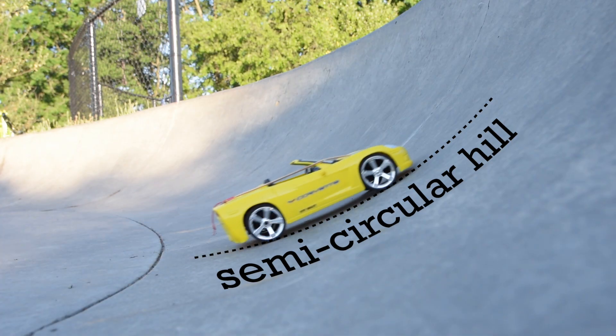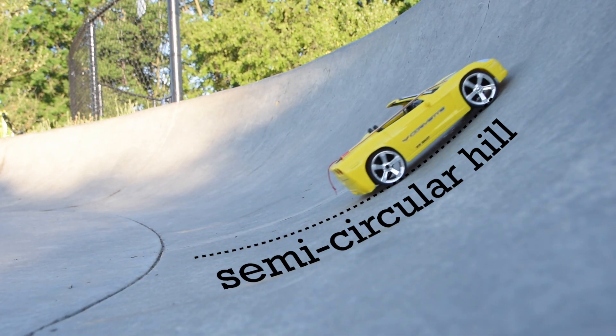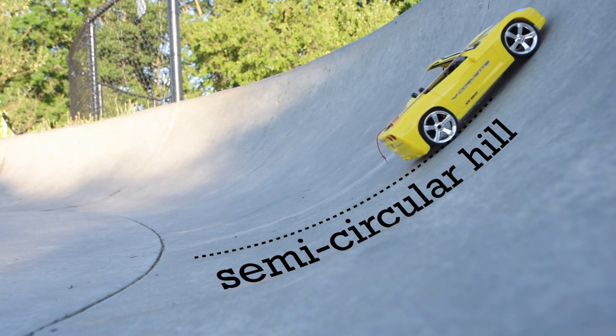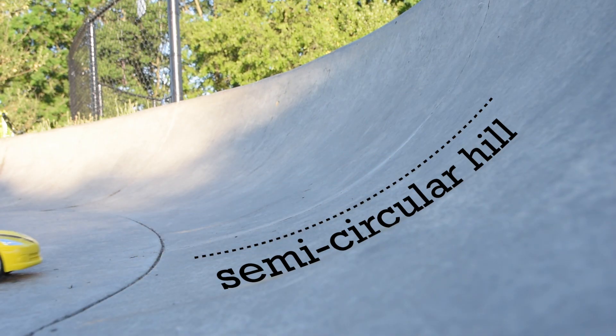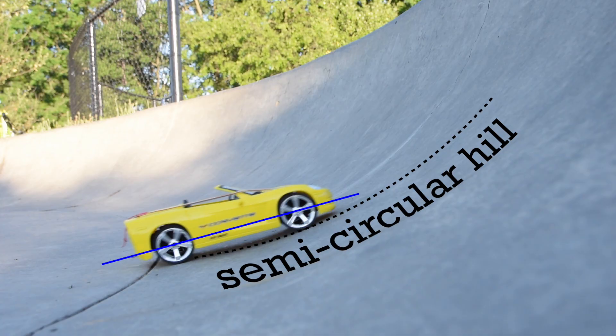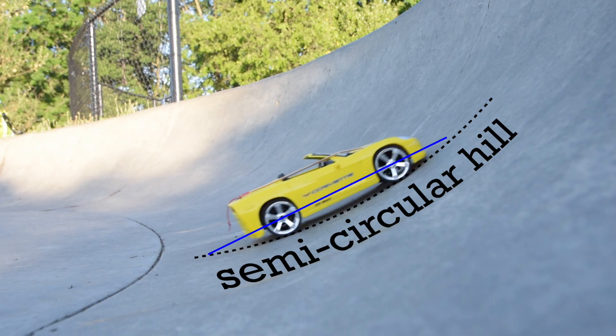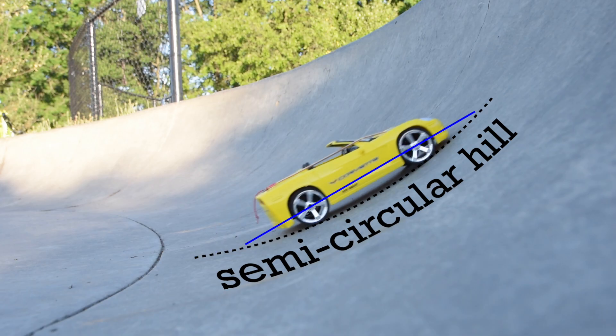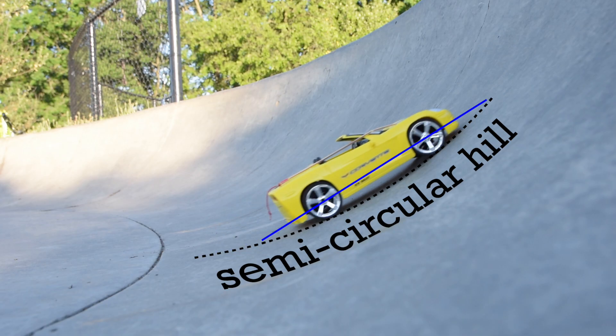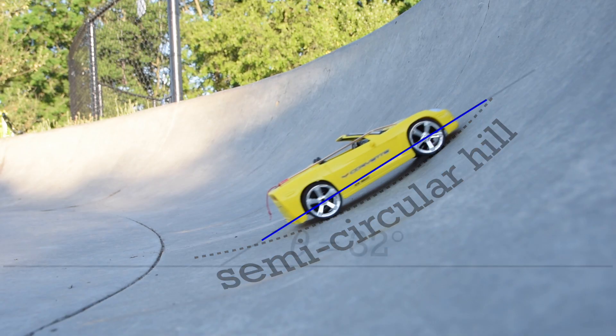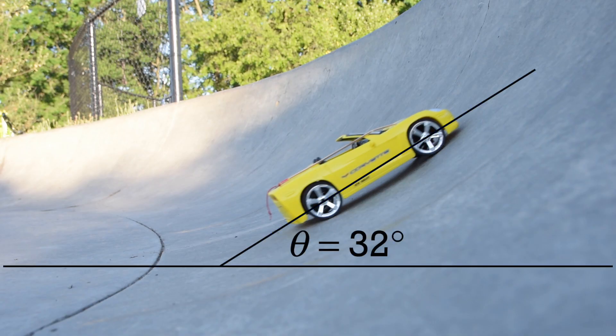Let me clarify that angle. As the car goes up the hill, the angle of the hill where the car is located increases. If we draw a line which intersects the center of the two wheels, you can see how the angle of the hill increases. And if we pause the car at the point we are talking about, you can see how the hill makes an angle of 32 degrees with the horizontal.